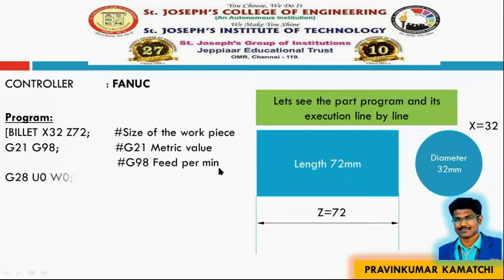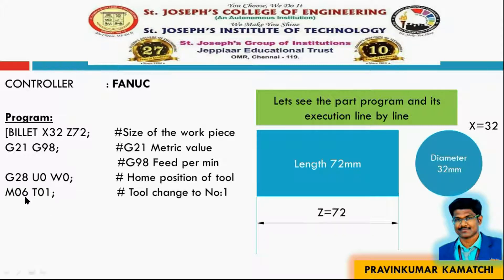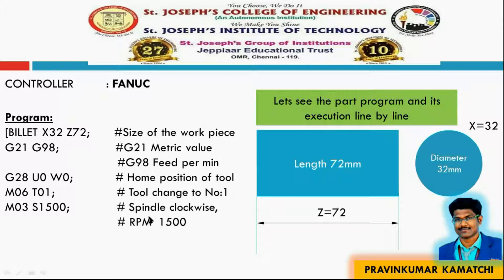We have to tell the home position of the tool, which is mentioned as G28 U0 W0. Then we have to give the tool instructions: M06 means we have to change the tool, and T01 means we are fixing tool number one. The next instruction is M03 S1500, which means the spindle has to rotate in the clockwise direction at 1500 RPM.